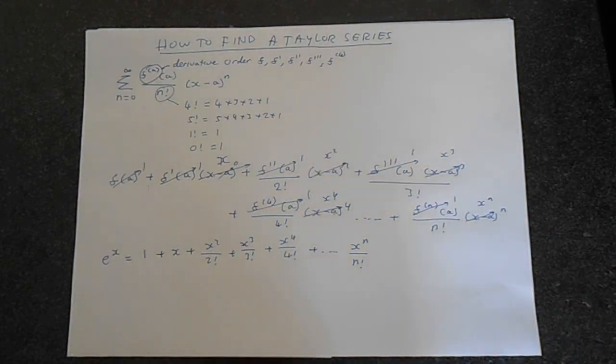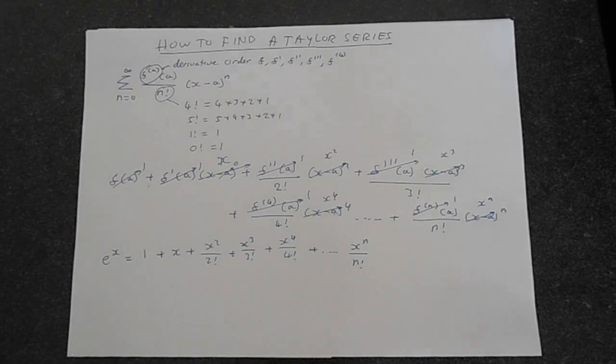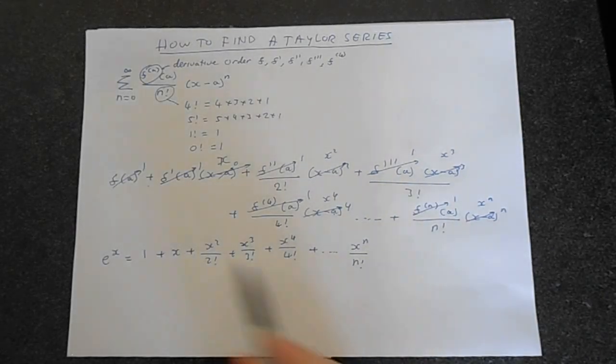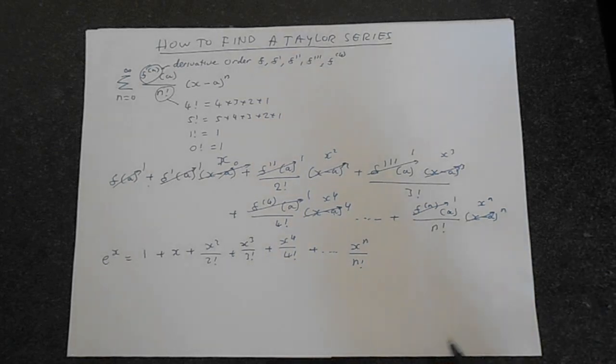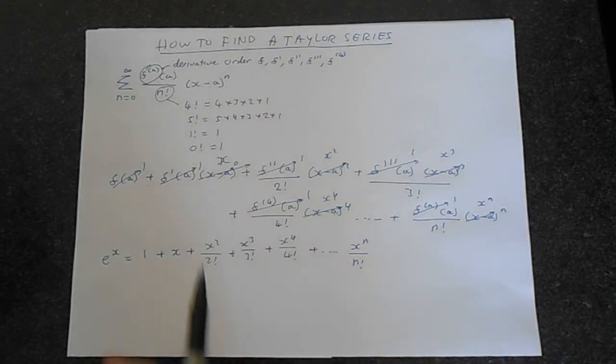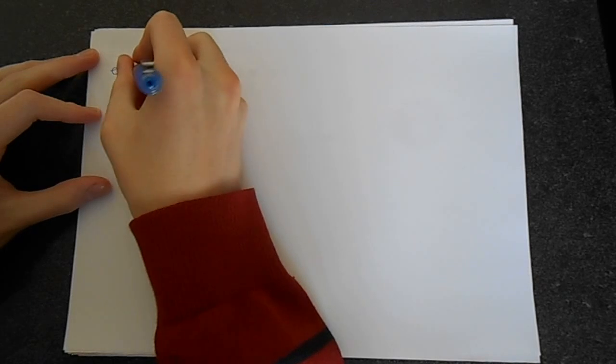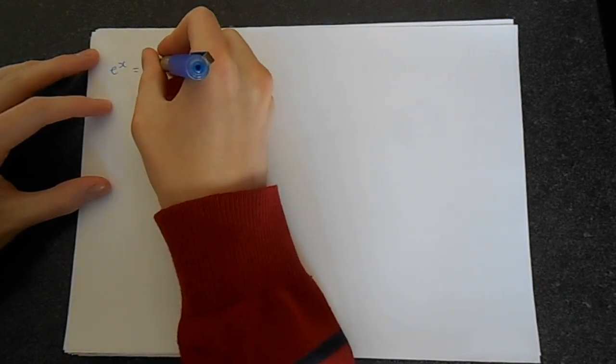There is something else you can do, which is called the general term. In this example, we've assumed that we know some point a. We've decided that it's centered at, or the expansion point is some value a. But what if we didn't know, and we just wanted to work out what the Taylor series is for any value of x? So e to the x, what could we do there? In that case, we're going to get e to the x equals, or e to the a.